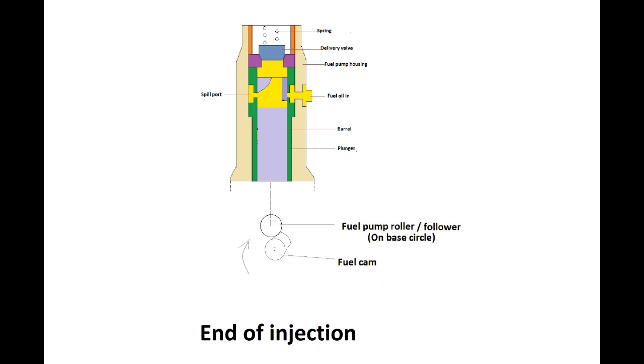The delivery valve at the top of the barrel closes and the fuel pressure in the barrel drops back to that of the supply pump. The plunger will continue to rise until the cam follower is on the peak of the cam.